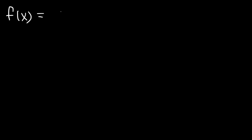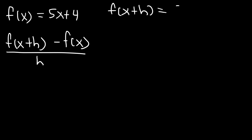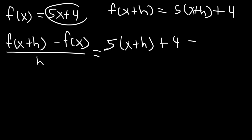Try this example. Let's say that f of x is 5x plus 4. Go ahead and find the difference quotient. First let's find out what f of x plus h is going to be — all you need to do is replace x with x plus h everywhere you see an x, so it's 5 times x plus h, plus 4. Let's replace f of x plus h with that expression, and f of x is just 5x plus 4, placed within parentheses.